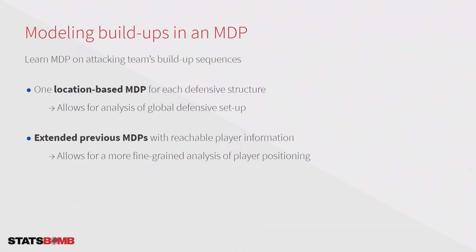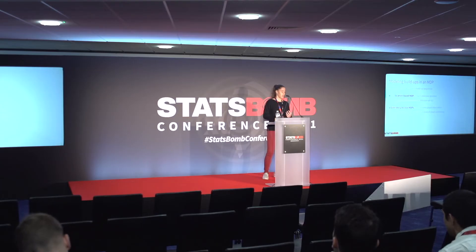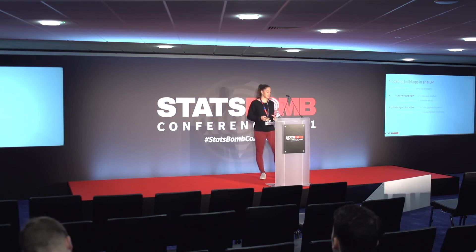The first type is a location-based MDP. In the states we only take into account the current location of the ball, and we create one such MDP for each defensive setup. This MDP allows us to analyze the global defensive setup of teams. The second type extends these previous models with reachable teammate information in each state, allowing a more fine-grained analysis of player positioning.